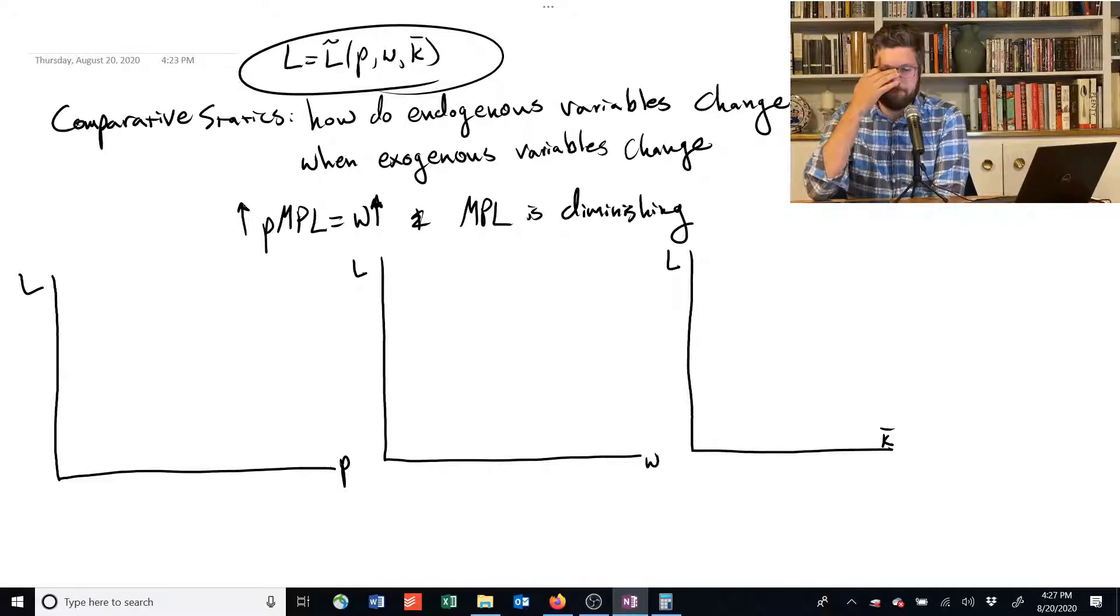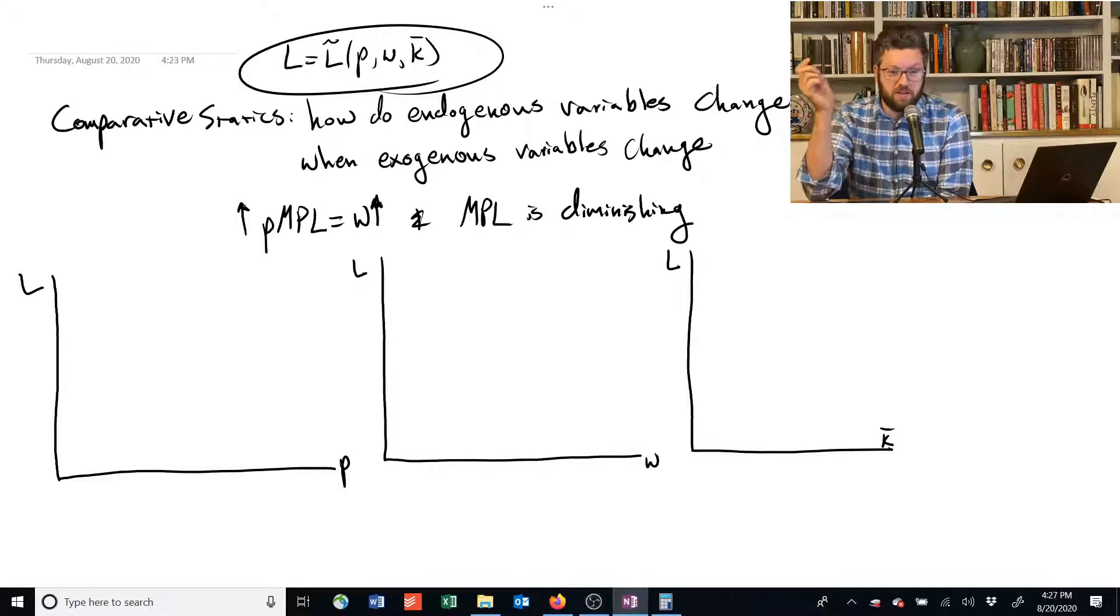The production function is given to us. But if the marginal product of labor is diminishing, that means that when you increase labor, that marginal product of labor goes down. However, if you decrease labor, the marginal product of labor is going to do the opposite and go up.